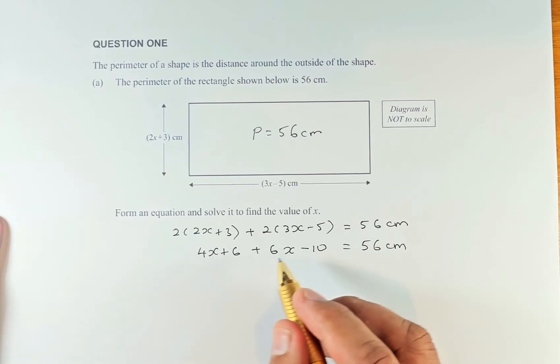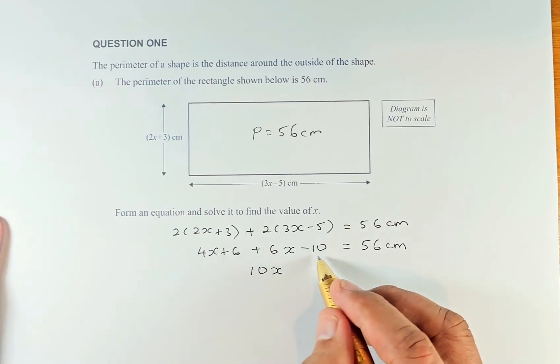We're going to simplify: 4x plus 6x is 10x, 6 minus 10 is minus 4. That equals 56 cm.